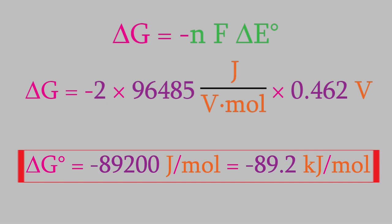That's a really large negative value for delta G, so that tells us that this is a very spontaneous reaction. That's exactly what we'd expect for a voltaic cell, because we know from experience that electricity flows through them spontaneously.